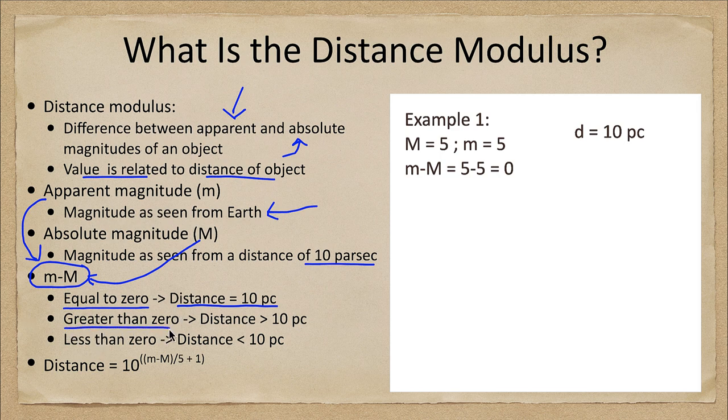If it is greater than zero then you would have a distance greater than 10 parsecs. If this is a bigger number that means that the star looks fainter than it should, so it looks fainter, that means it must be at a greater distance. If you get a value less than zero then the distance is less than 10 parsecs and you would find it closer to Earth.